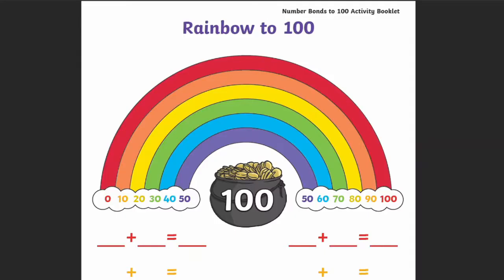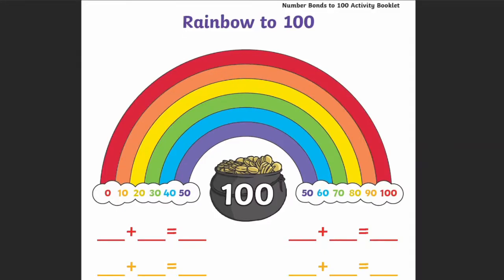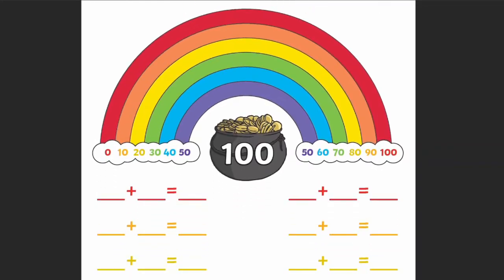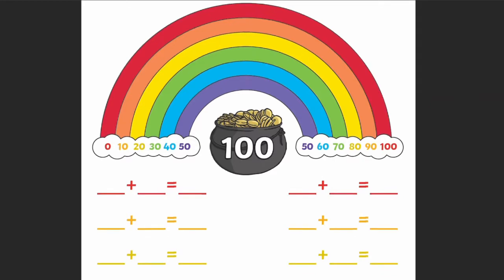This booklet is full of activities that make learning number bonds to 100 easy. For example, there's this activity where learners are given a rainbow as a visual showing which numbers can bond together to get 100. They also can write down the sums that add up to 100 for each color of the rainbow.